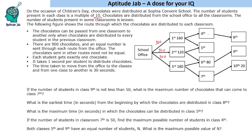Each student gets exactly one chocolate, so there are a total of 900 students. It takes 1 second per student to distribute chocolates — so if there are 160 students, it will take 160 seconds. The time taken to move from the office to the classes and from one class to another is 30 seconds.